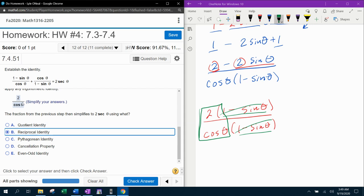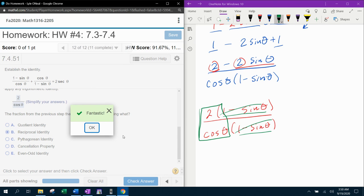Definitely not a Pythagorean identity. That involves squares. It's not the cancellation. We're not canceling anything out. It's not an even-odd identity. That involves angles. No, this is a reciprocal identity. And we're done.